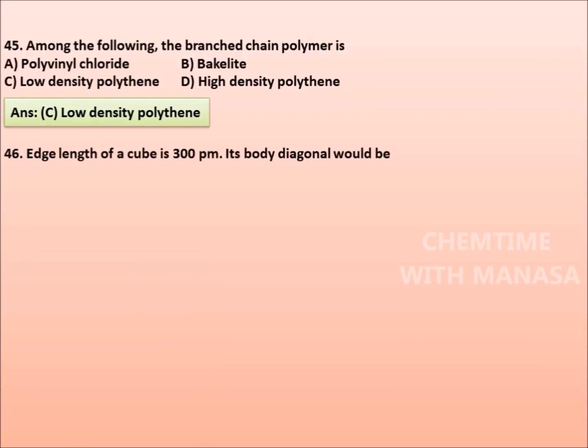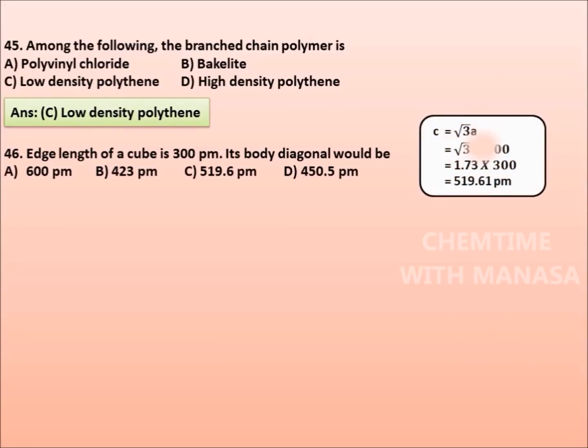Question 46: Edge length of a cube is 300 picometers. Its body diagonal would be 600 pm, 423 pm, 519.6 pm, or 450.5 pm.